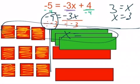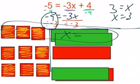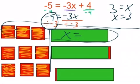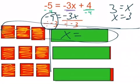Duplicating the tiles and moving them into place, we get our final answer. Remember: solving for x by isolating it step by step, and modeling with the algebra tiles — that's one variable, two step equations.